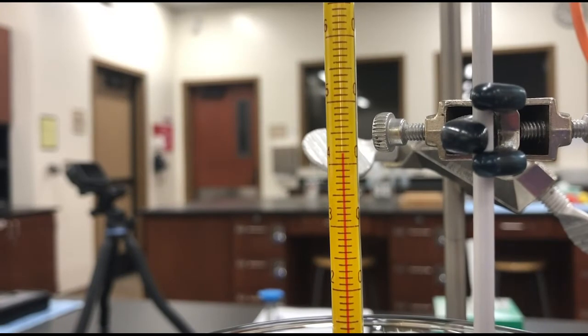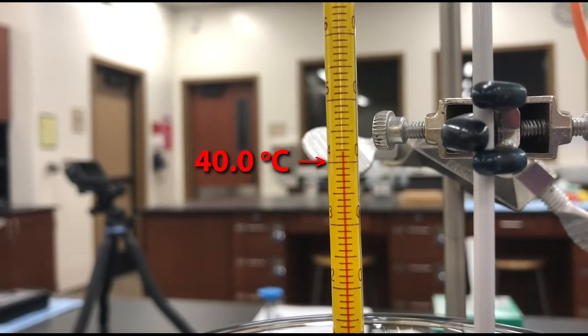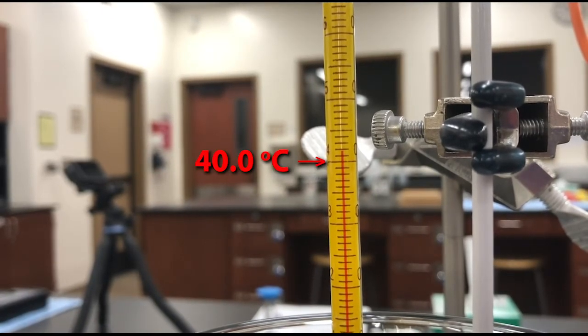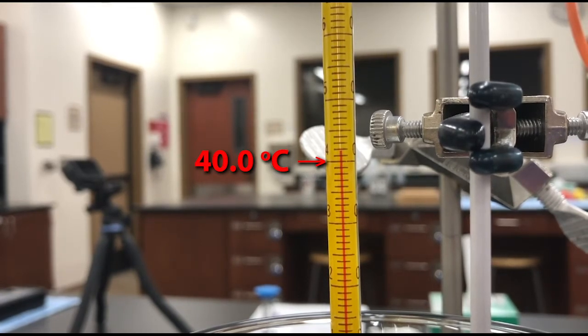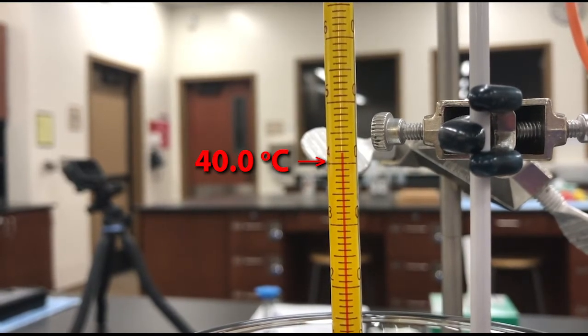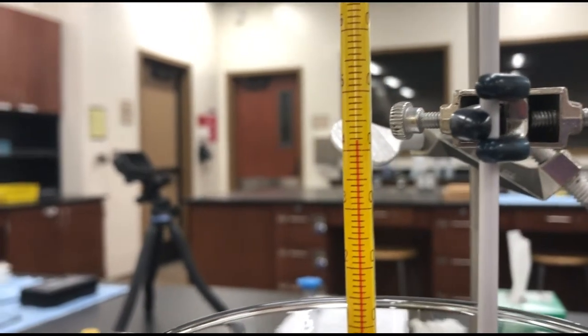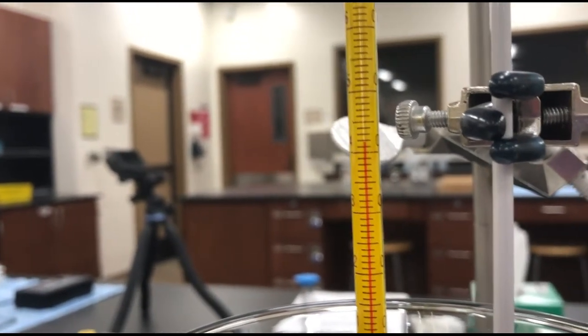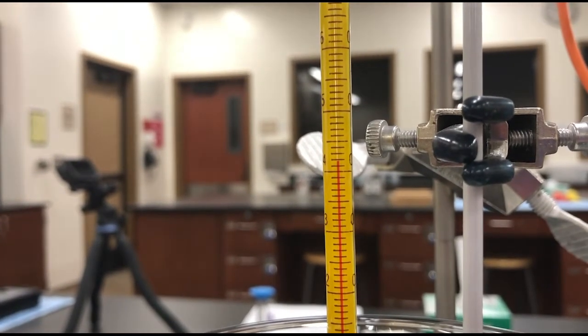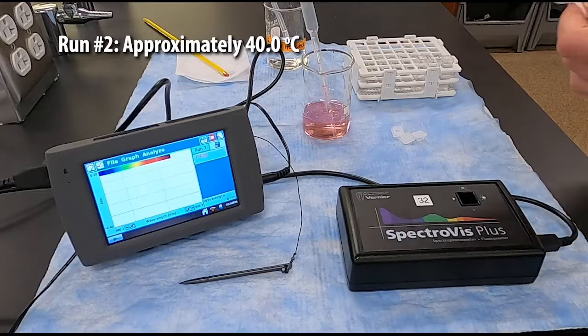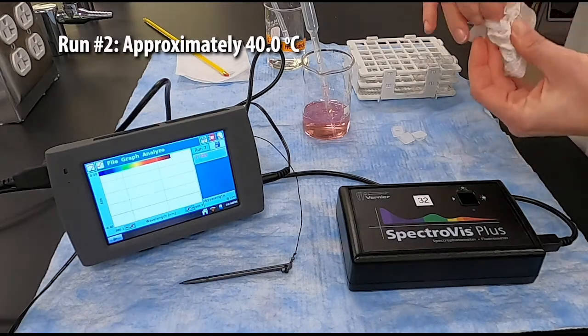Notice that the color of the solution has changed slightly compared to our starting solution. Now we want to record the actual temperature of this water bath. Because this thermometer has the numbers on both sides, it makes it hard to see. The long line indicated with the red arrow is 40 degrees. You can see the actual temperature is slightly higher than that. So you do want to record that in your notebook with the correct number of decimal places.